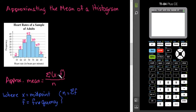For this one, x represents the midpoint of each of the categories, f represents the frequency of that particular category, and n is the sum of all of the frequencies.